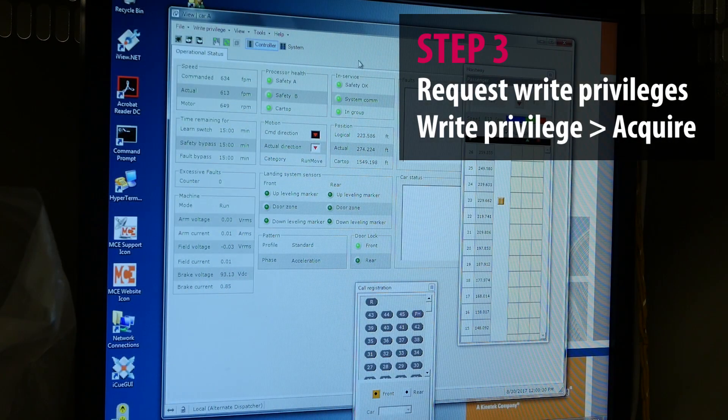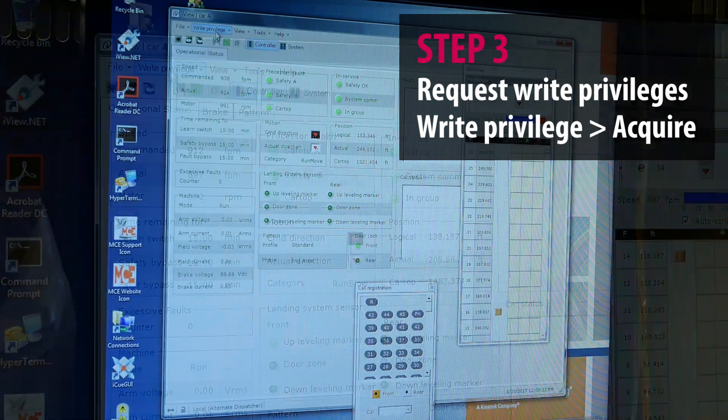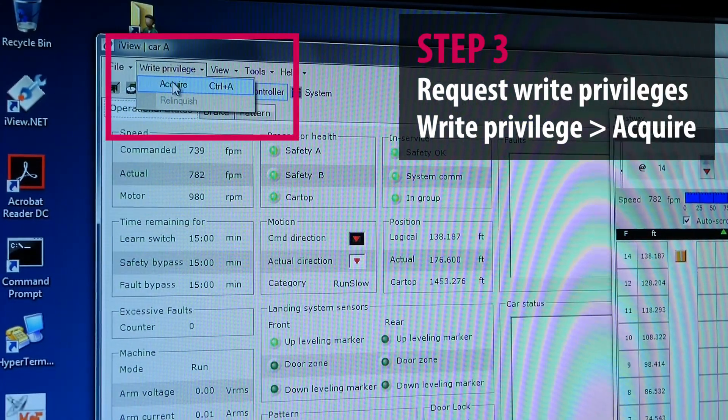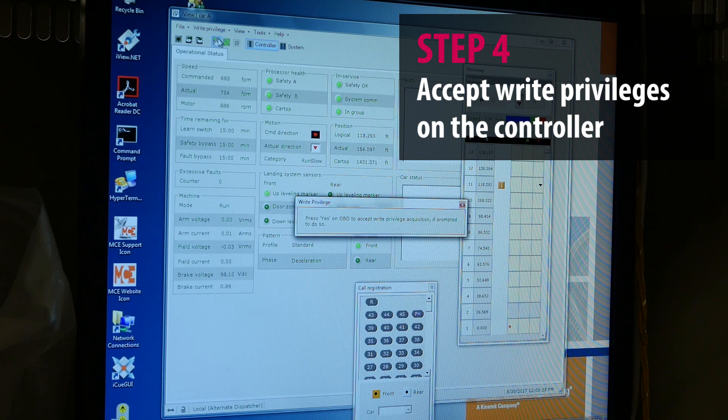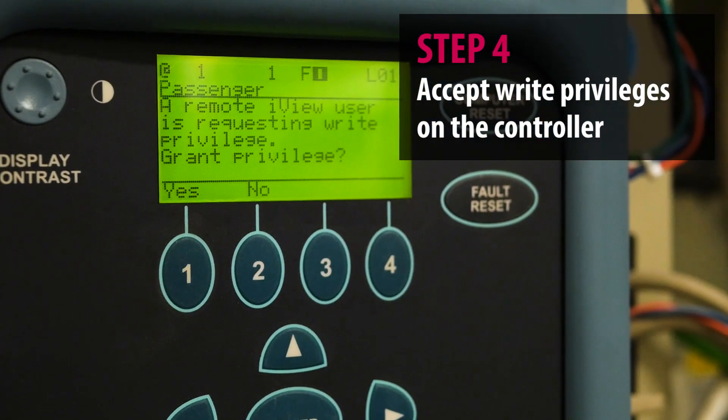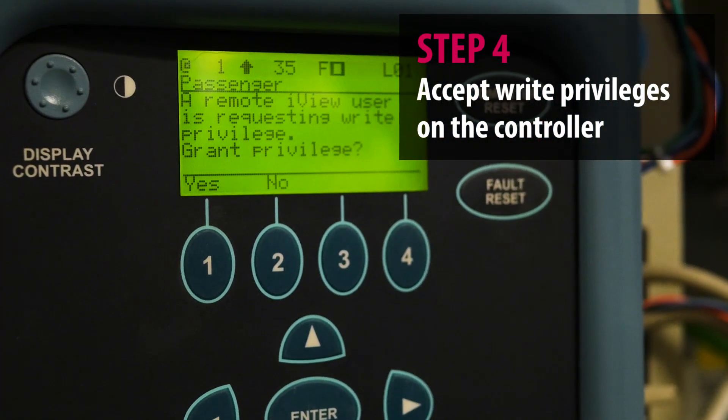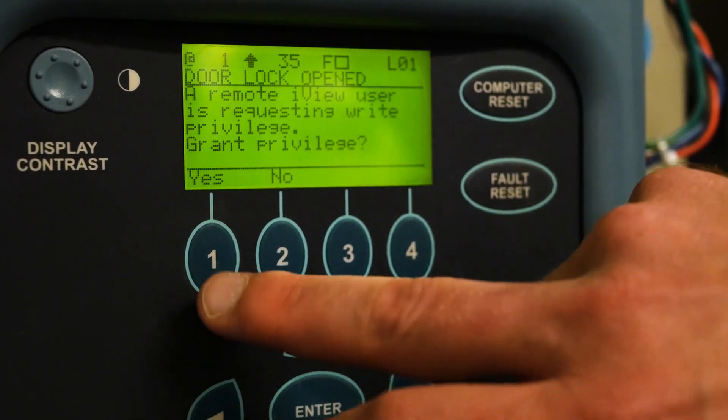To make changes on the controller, first we have to request write privilege by going to write privilege and select acquire, and then from there you'll have to go to the controller to hit accept. To accept write privileges on the controller, you'll have to hit yes.